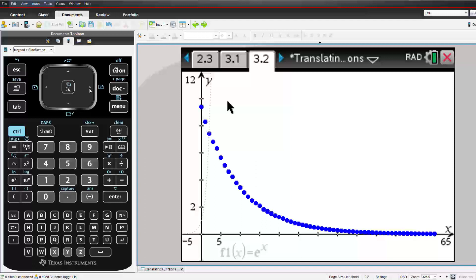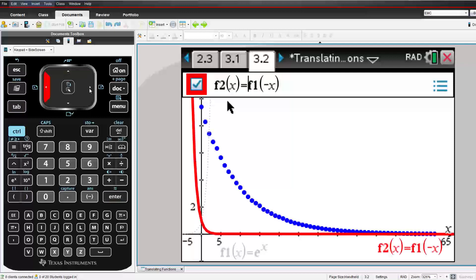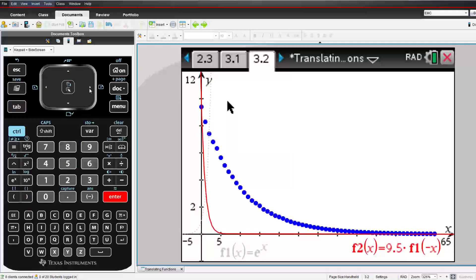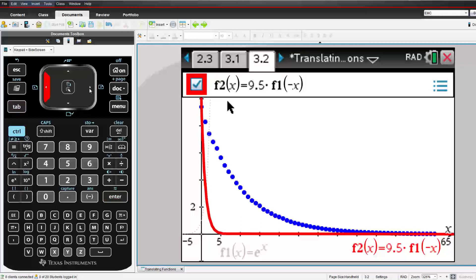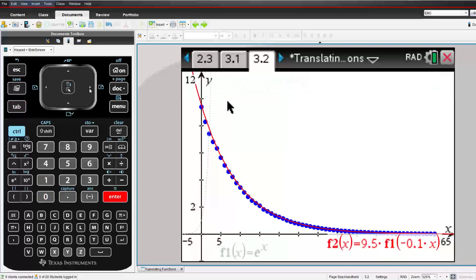This time we'll do a reflection in the y-axis. So we'll enter our function again, a transformation of f1, and we'll enter as f1. We'll need to apply some dilations. I'm going to try 9.5 times f1 and then maybe edit the other one by a little, let's say, 0.1. As you can see, I've done this one before.